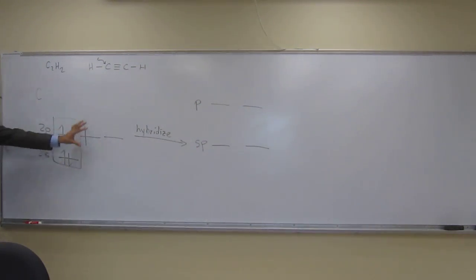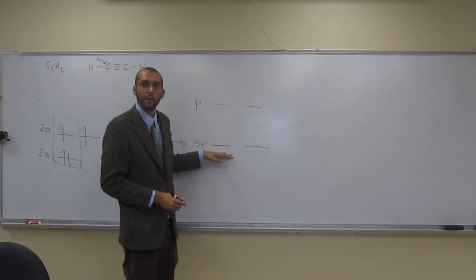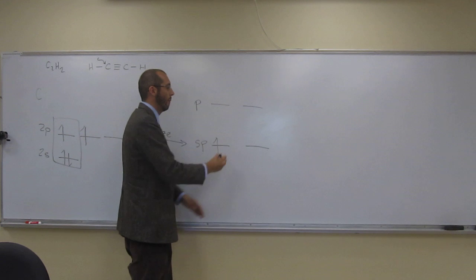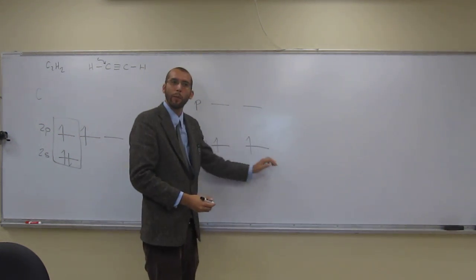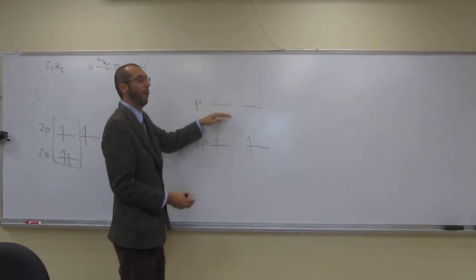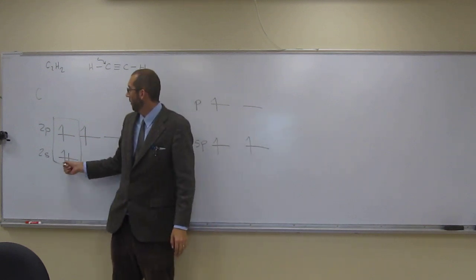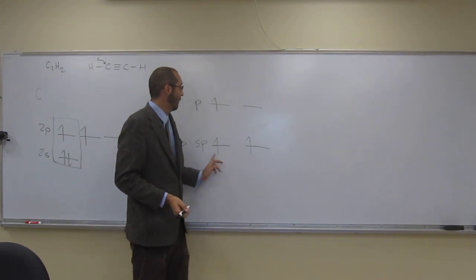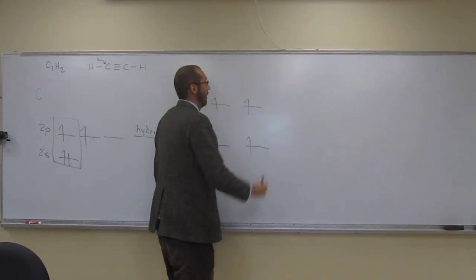So now we're going to take these electrons here and throw them into these orbitals. So how many electrons here? 1. 1? Yeah, for each orbital. 1. Here, 1. 1. Why? Because they're going to make sigma bonds. We know that, right? And what about here? 1. 1. And do we have any more? No. How many do we have? 1, 2, 3, 4, right? How many do we have over here? 1, 2, 3, 4, right?